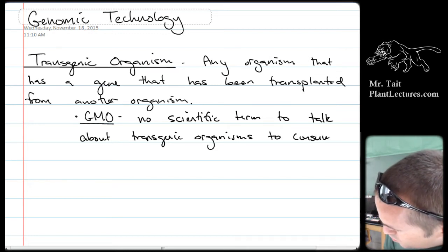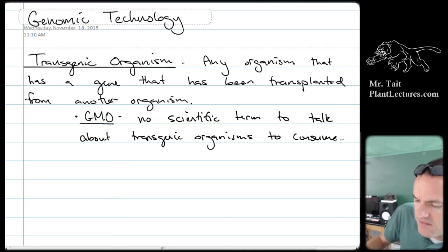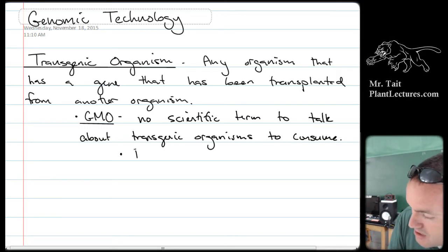When we talk about GMOs, we're generally talking about things that we eat. GMO - genetically modified organism - is a non-scientific term to talk about transgenic organisms that we consume. There are two different things we would do to a GMO crop. The first is add some resistance genes.